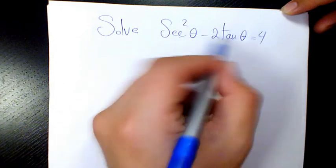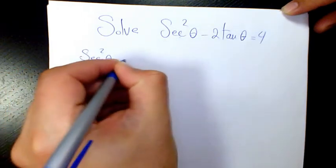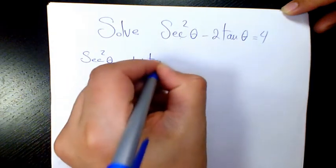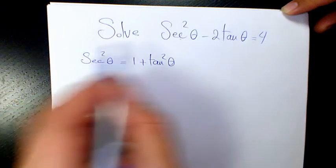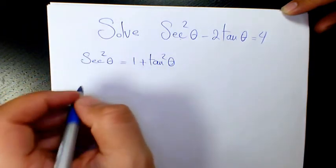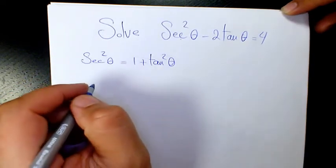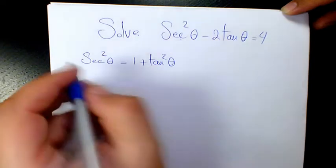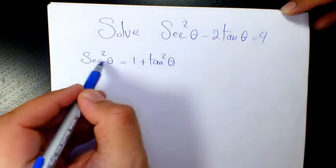You know sec²θ = 1 + tan²θ. We have it from trigonometric identities. If you don't remember that, just go and find it in the trigonometric identities playlist. I will leave the link below in case you want to find out the trigonometric identities.